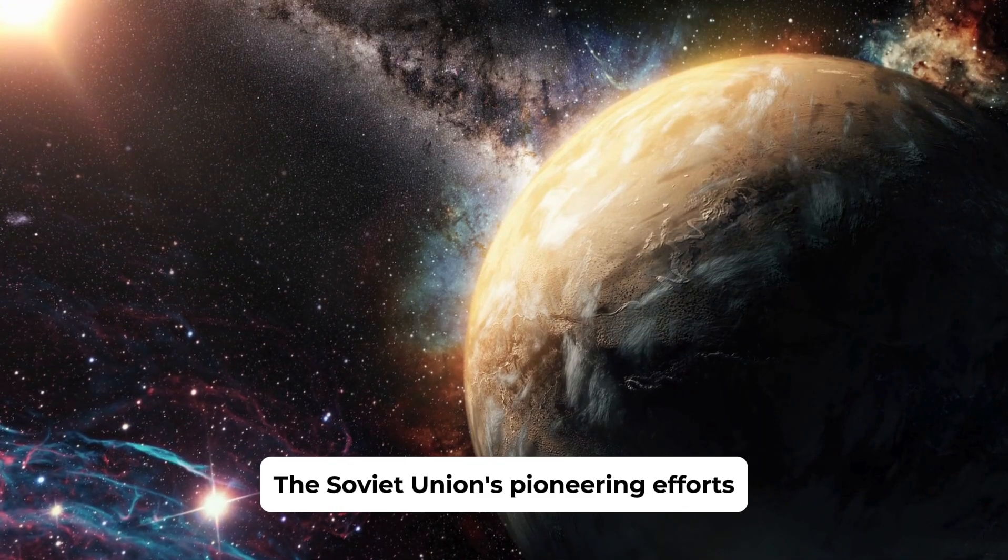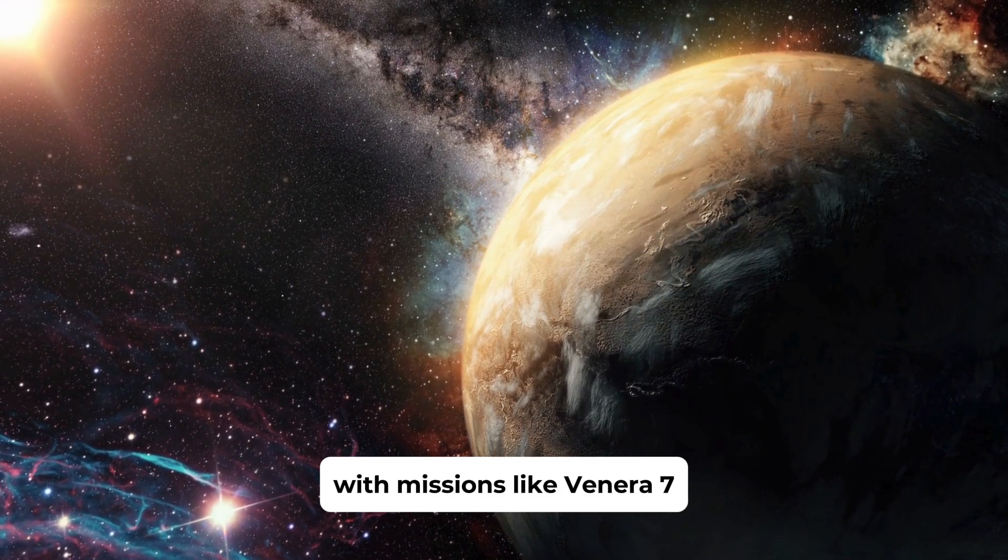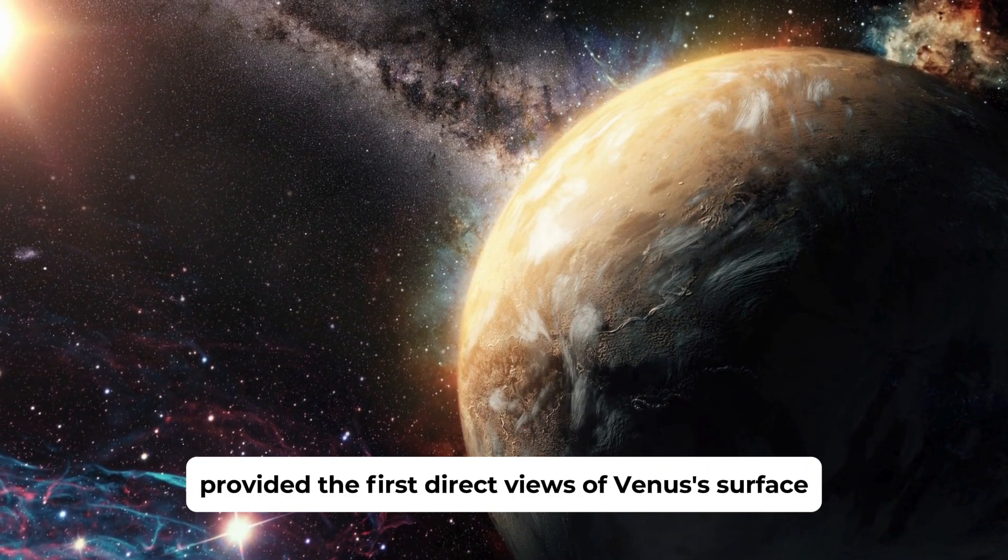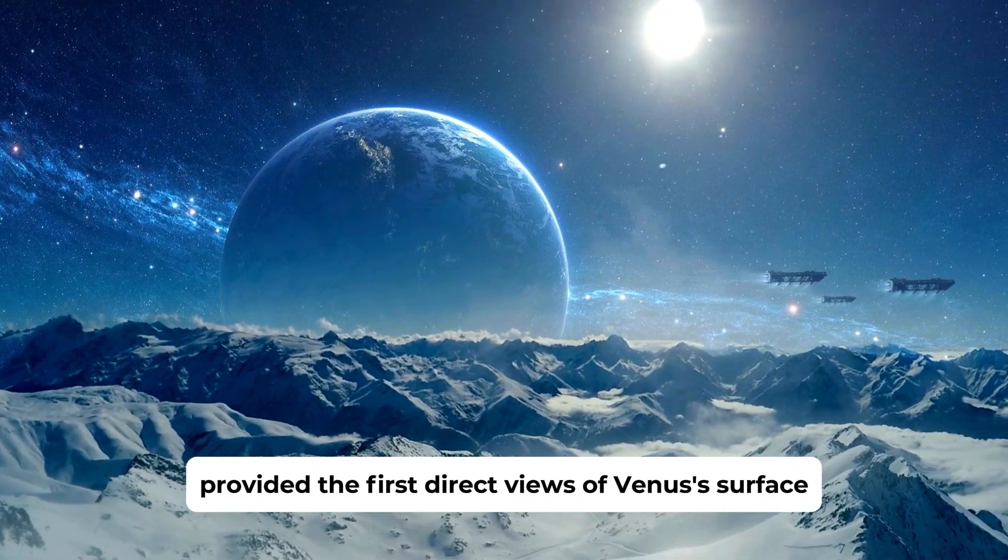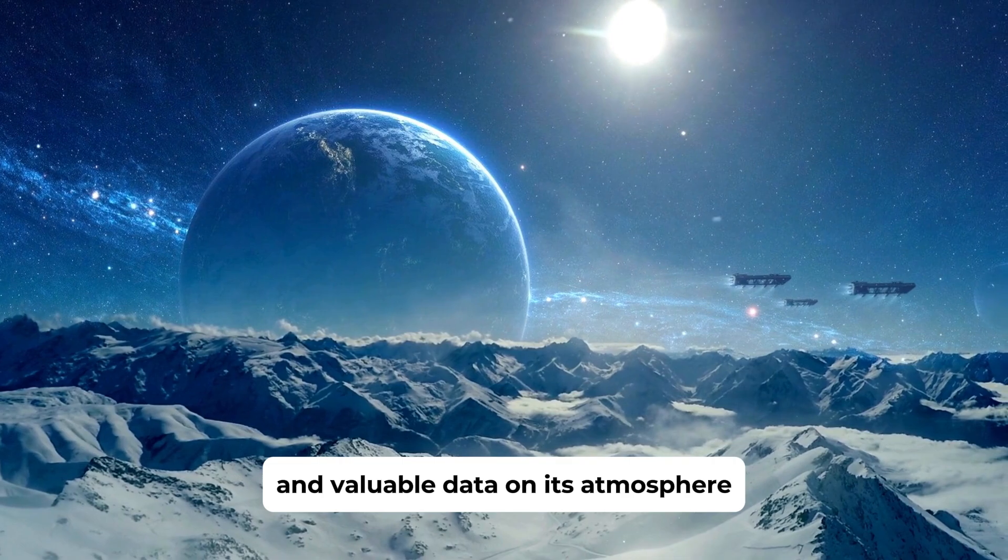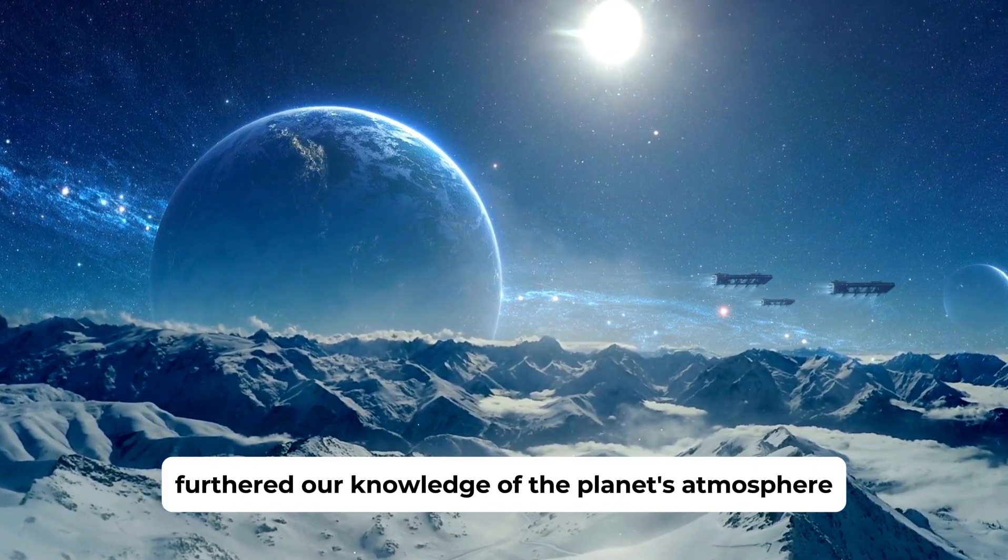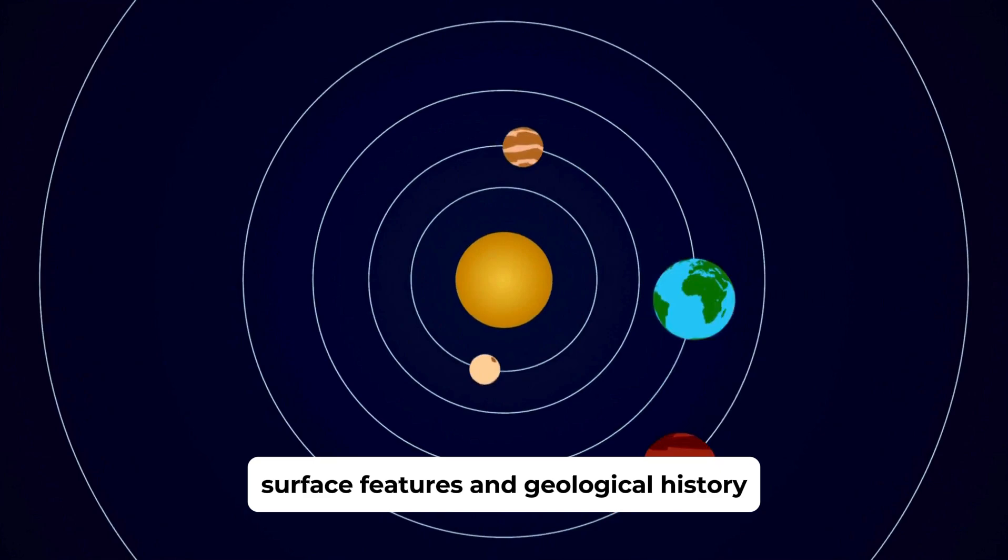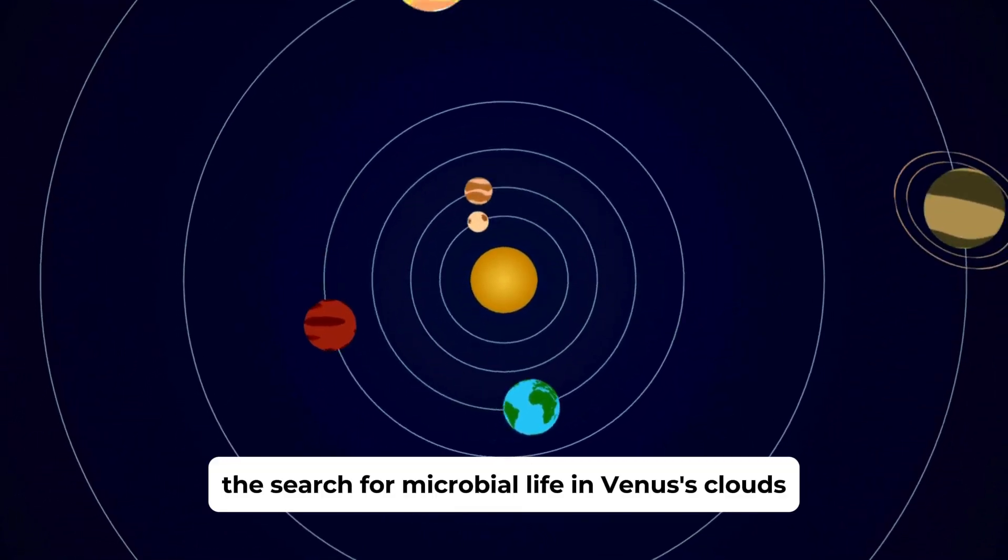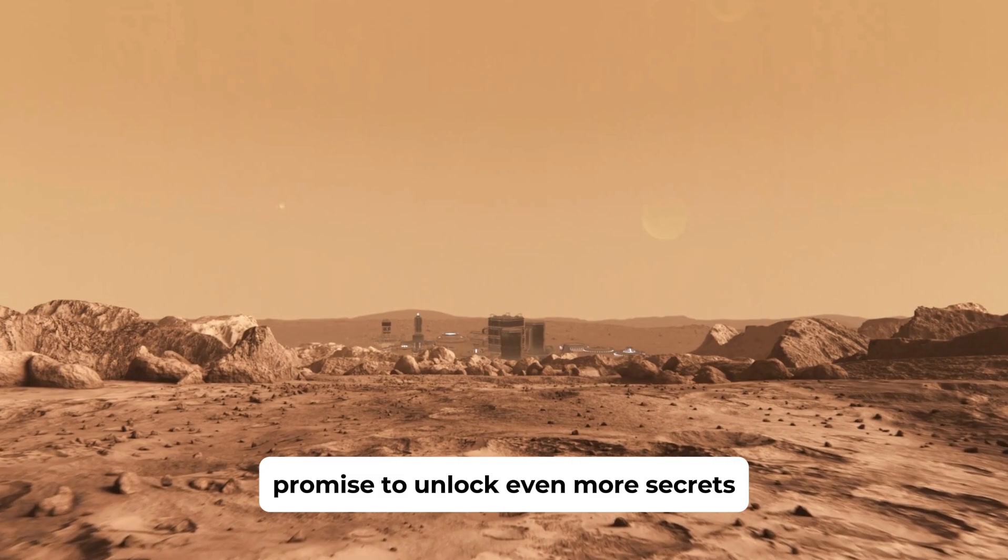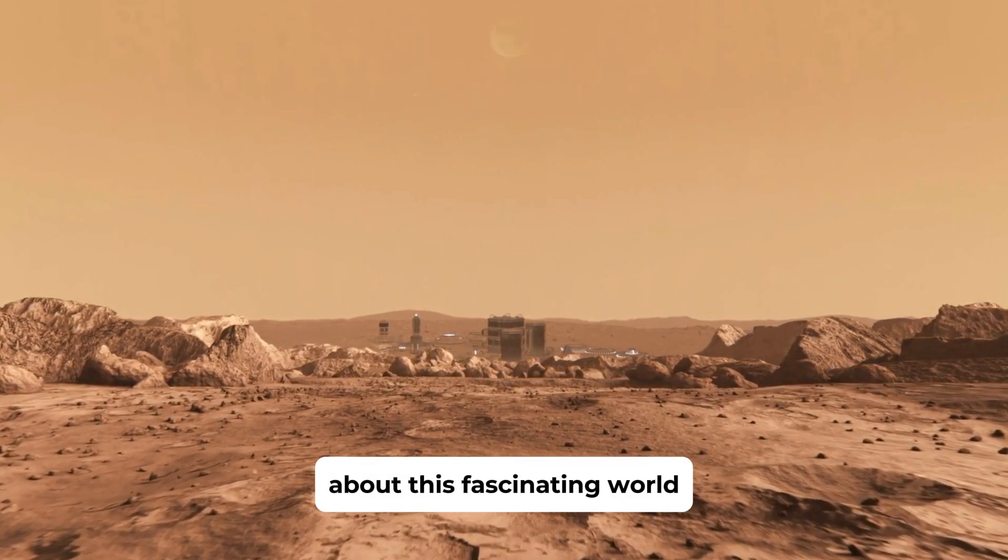The Soviet Union's pioneering efforts with missions like Venera 7, Venera 9, and Venera 14 provided the first direct views of Venus's surface and valuable data on its atmosphere. NASA's Mariner and Magellan missions furthered our knowledge of the planet's atmosphere, surface features, and geological history. The search for microbial life in Venus's clouds and the upcoming missions promise to unlock even more secrets about this fascinating world.